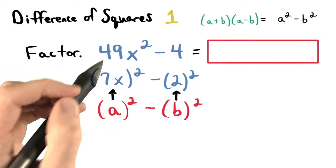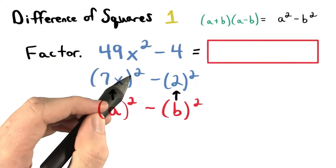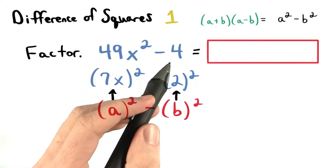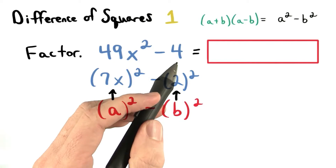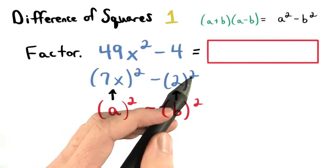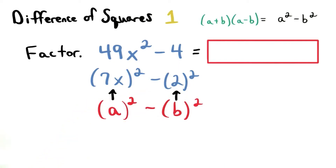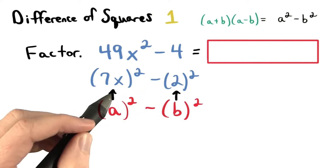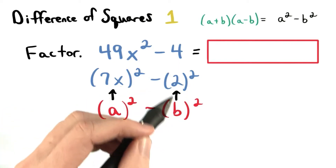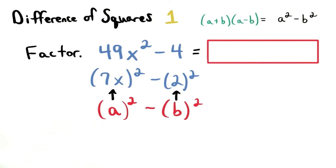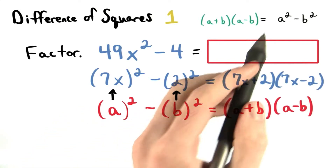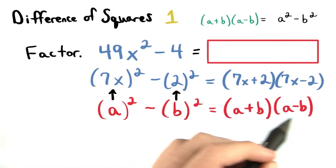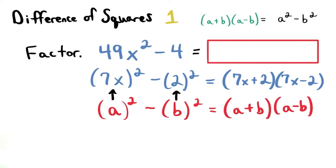I know this is a perfect square since 7x squared is 49x squared. 4 is also a perfect square since 2 squared equals 4. So the a is really 7x and the b is really positive 2. We can factor the difference of squares as a plus b times a minus b.